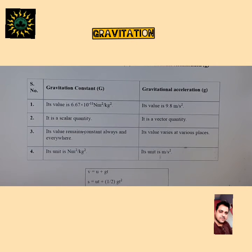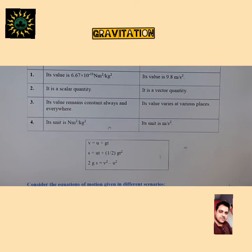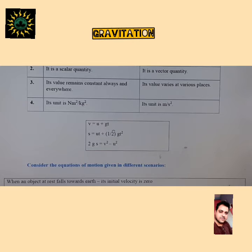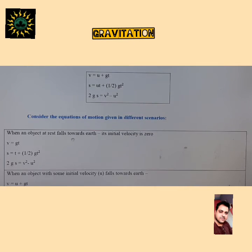G is a scalar quantity; small g is a vector quantity. G remains constant always and everywhere, while g varies at various places. Its unit is meter per second square. The equations of motion for a body falling under gravitational acceleration are the same as the normal equations of motion, except we replace the acceleration symbol 'a' with 'g' since the acceleration is due to gravity.